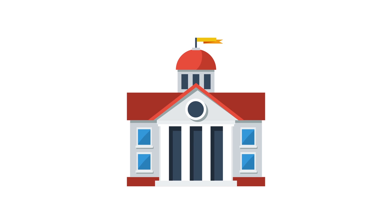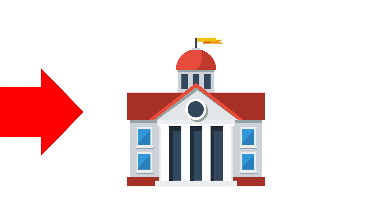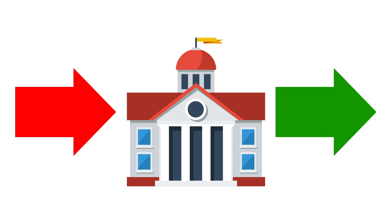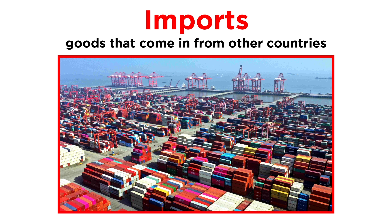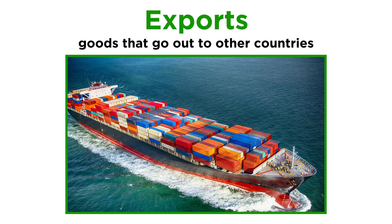Governments can also interfere with trade. First, governments control which goods go in and out of a country. Imports are the goods that come in from other countries, and exports are the goods that go out to other countries.